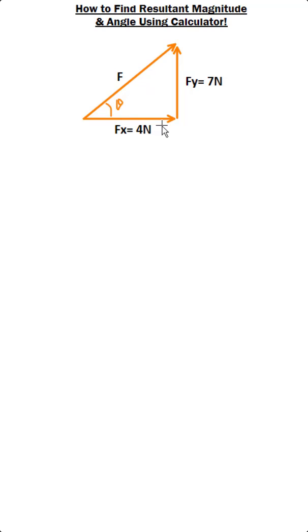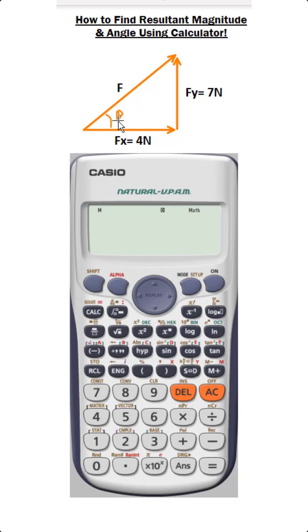F of x component of this force F equals 4 Newton and F of y is equal to 7 Newton. So how to find the magnitude of this force F and the angle of this force F with horizontal, this theta, using the calculator?